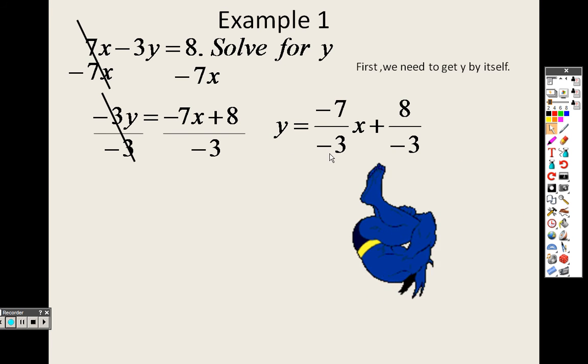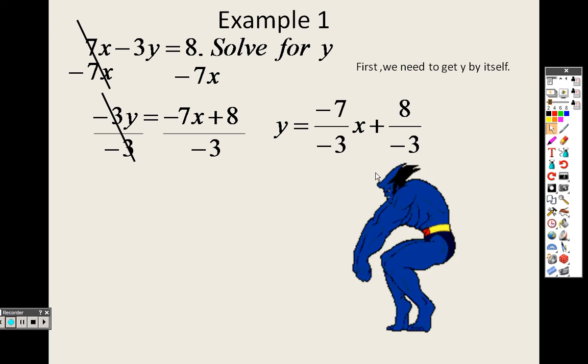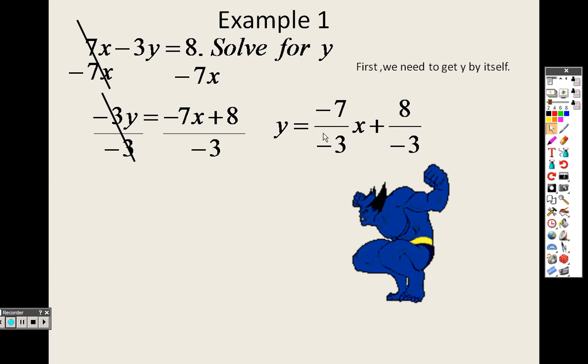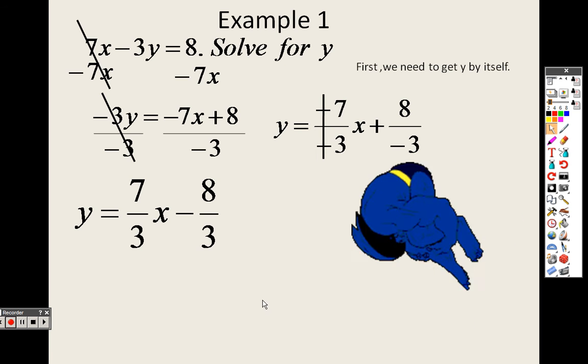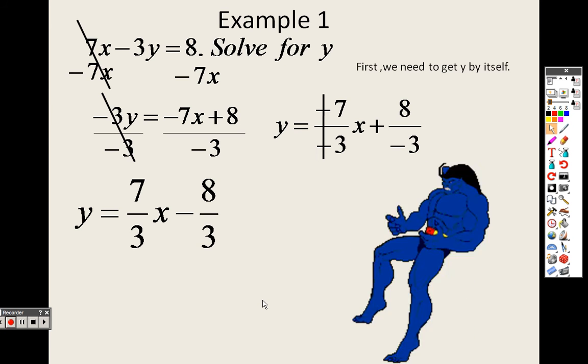So negative 7 is divided by negative 3. 8 is divided by negative 3. And since this is a negative over a negative, that becomes a positive. So it's 7 thirds x minus 8 thirds is when y is by itself.